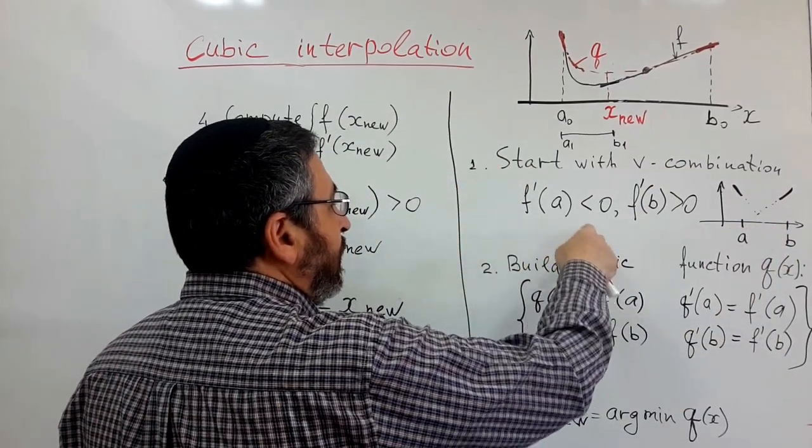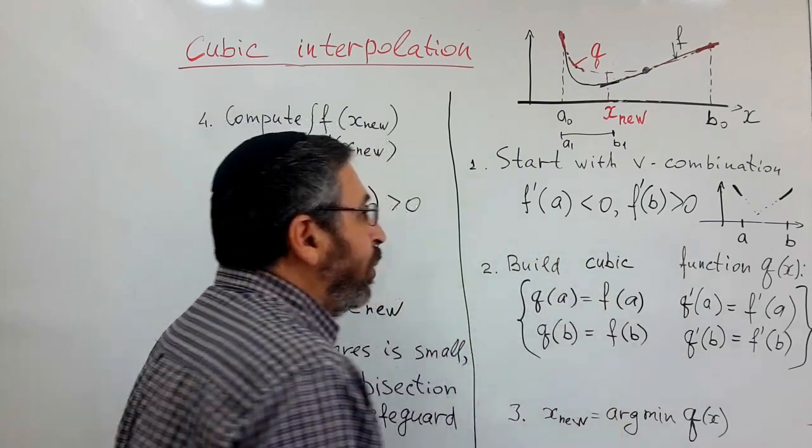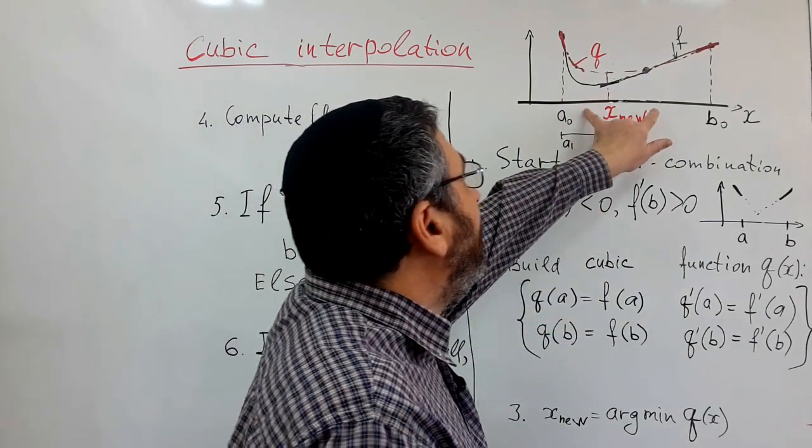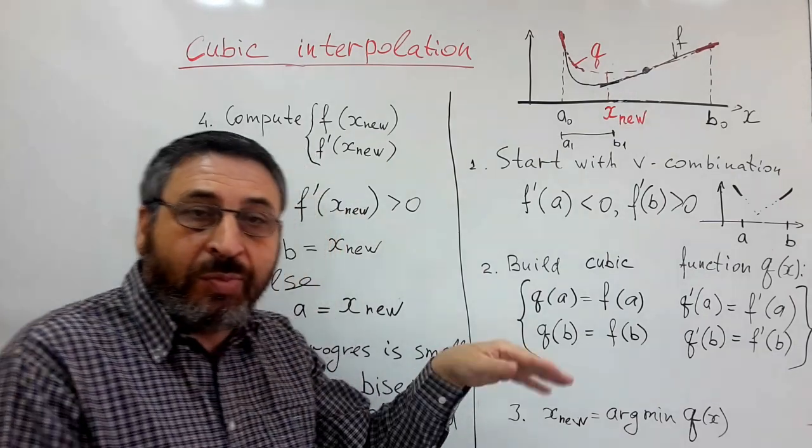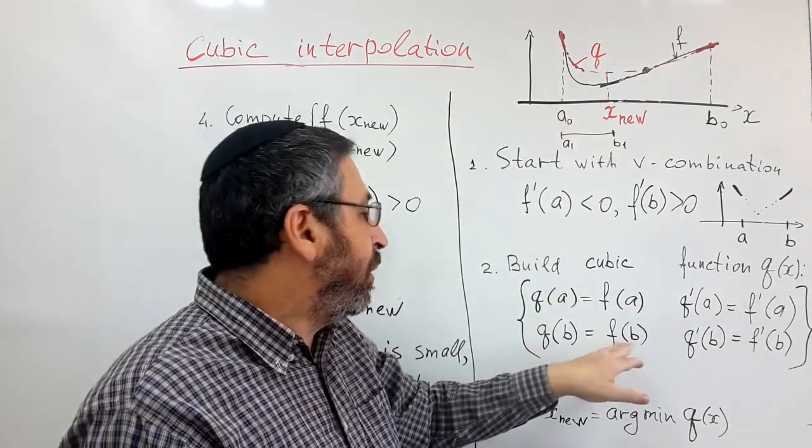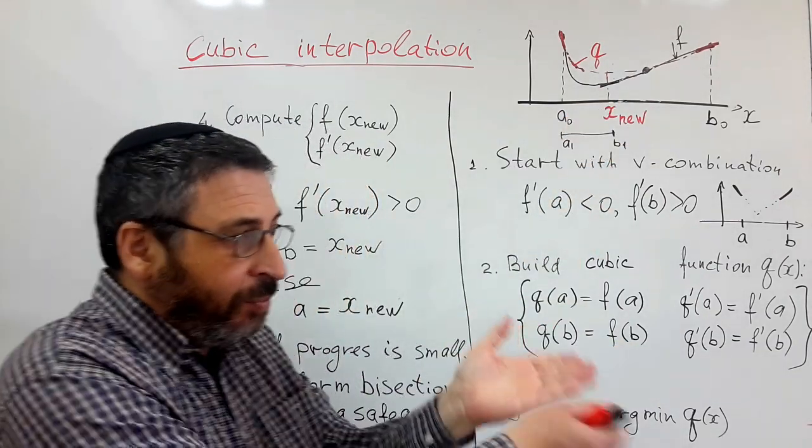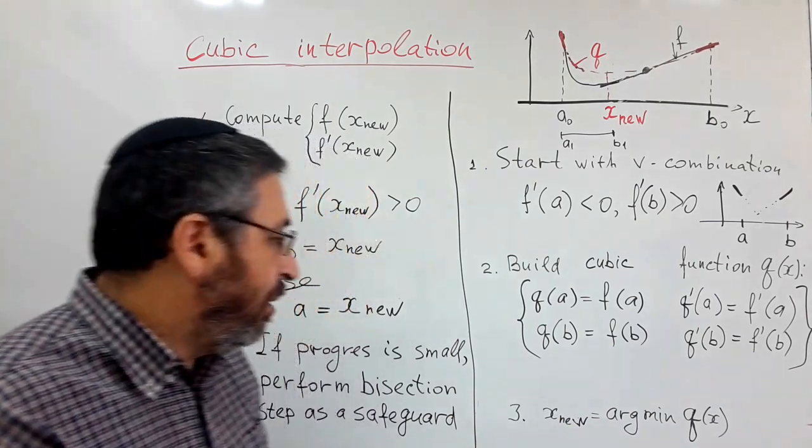Slope at a is negative and slope at b is positive. To ensure that minimum of our function and also minimum of quadratic polynomial will be inside the interval.